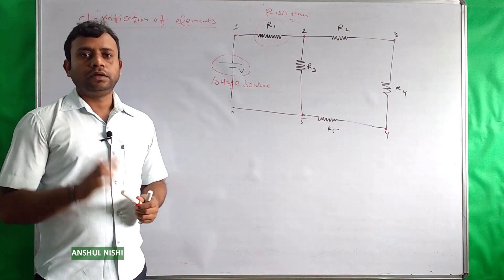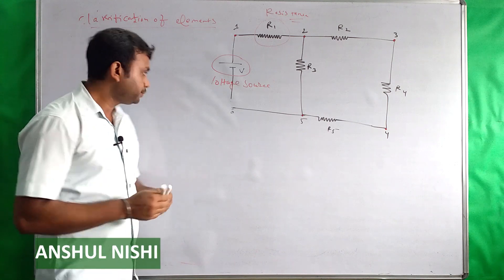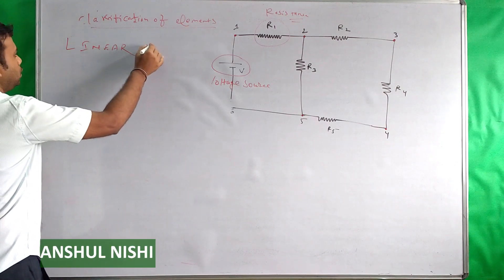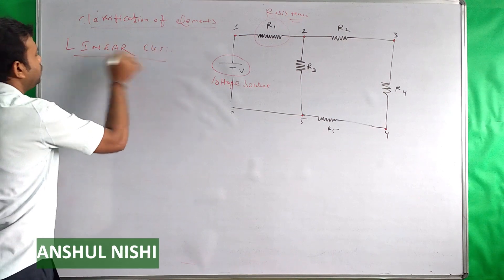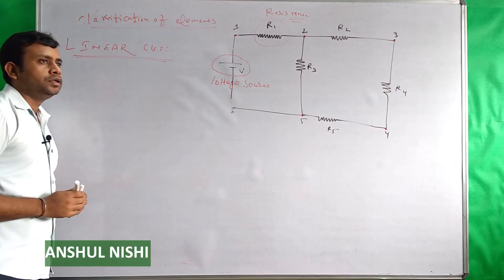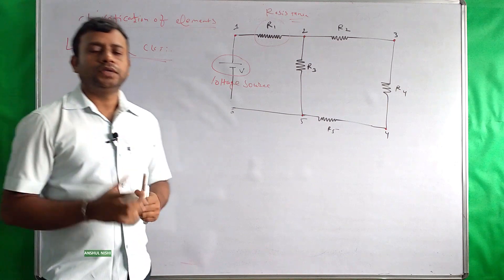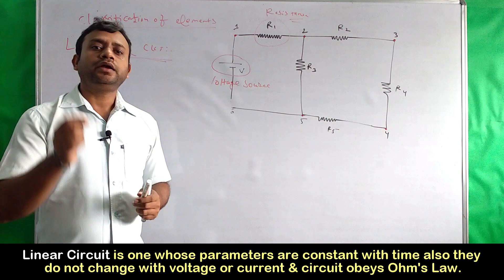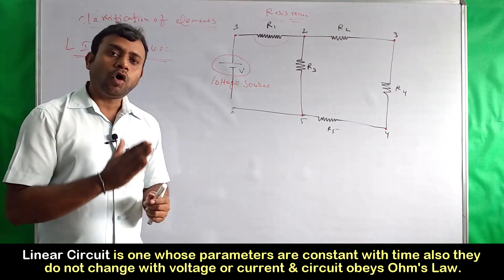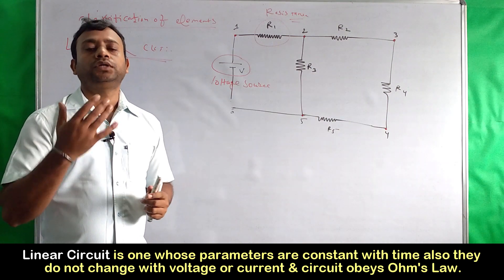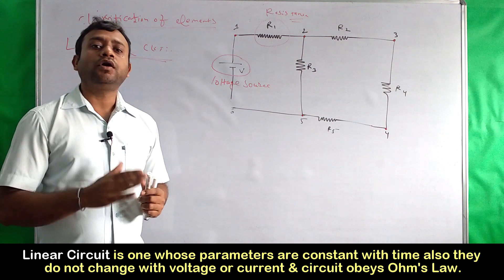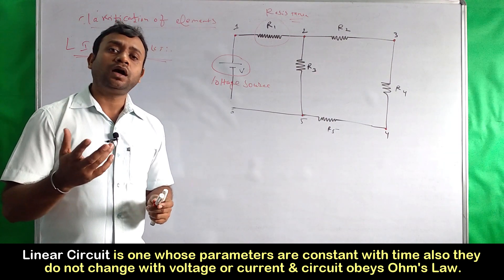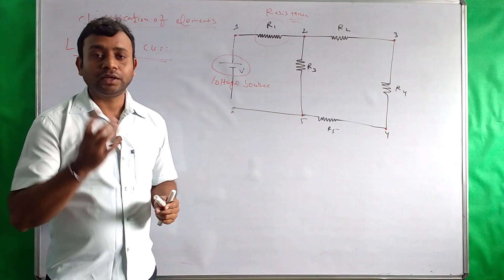Next we see the linear and non-linear circuits. A linear circuit is a circuit where its parameter does not change with respect to time, or does not vary with respect to voltage or current, or obeys Ohm's law.